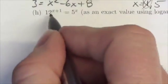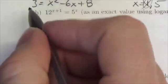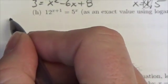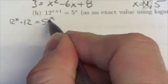No what I can do though is I can write 12 to the x plus 1. Because I'm looking at addition in the exponent that really is the same as 12 to the x times 12 to the 1 equals 5 to the x.